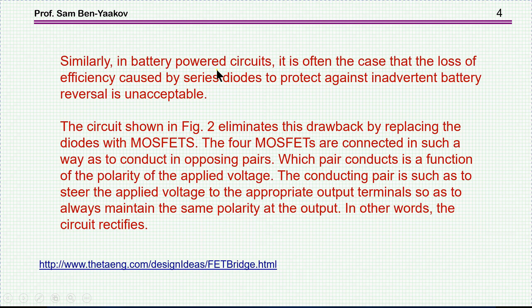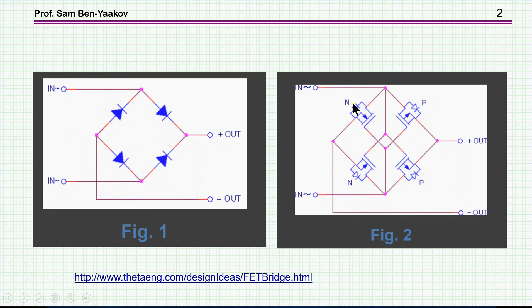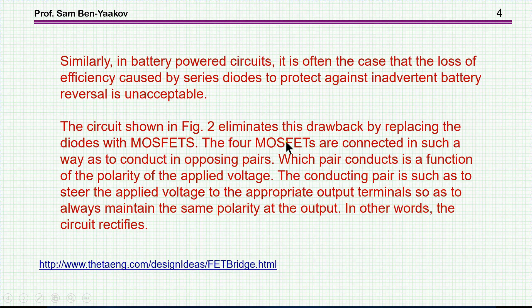So in this case, the losses will be due to the voltage drop and the circuit shown in figure two. Figure two is this figure with the transistors. Eliminate the drawback by replacing the diode with a MOSFET. The four MOSFETs are connected in such a way as to conduct in opposite pairs. Which pair is conducted is a function of the polarity of the applied voltage. The conduction pair is such as to steer the applied voltage to the appropriate output terminal so as to always maintain the same polarity at the output. In other words, the circuit rectified. So this is the basic operation of the circuit that we have seen.